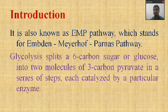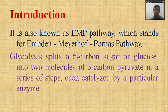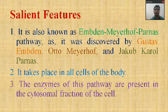Glucose is a six-carbon compound, whereas pyruvate is a three-carbon molecule. From one molecule of glucose there occurs formation of two molecules of pyruvate — hence there occurs splitting or lysis of the glucose molecule, which is why it is called glycolysis. Each and every reaction is controlled by a certain specific enzyme.